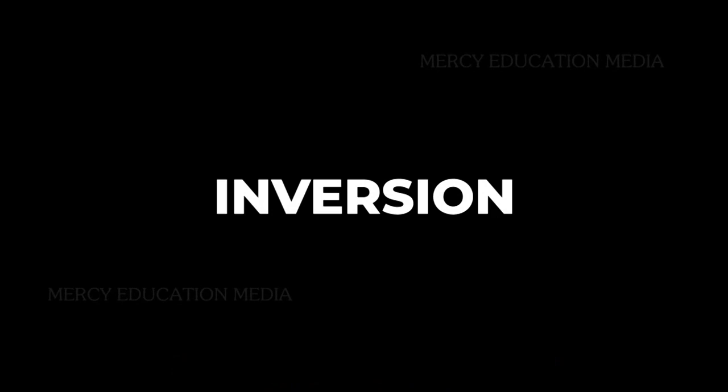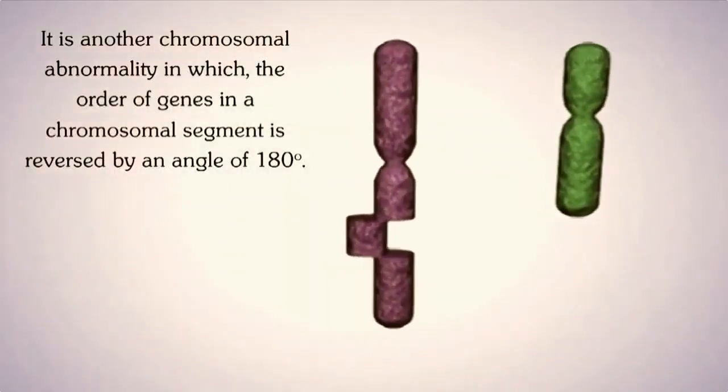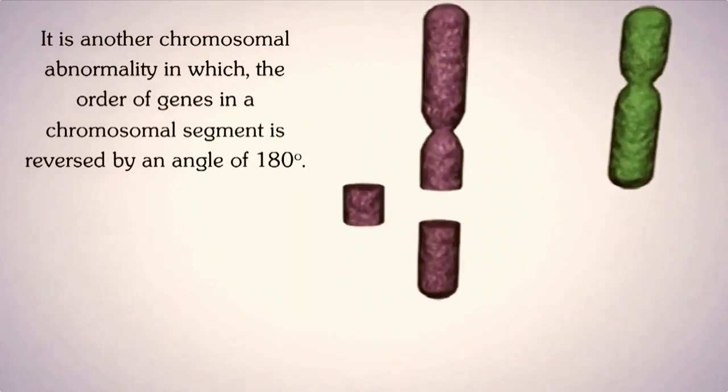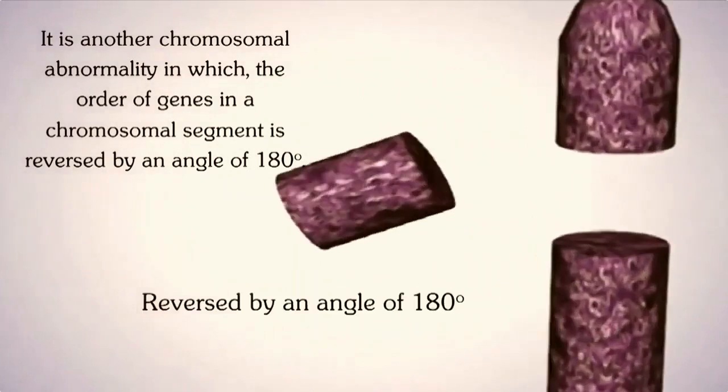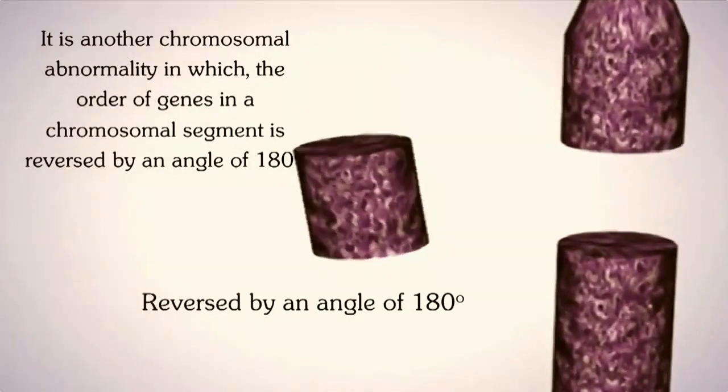Now let us see about inversion. It is another chromosomal abnormality in which the order of the genes in a chromosomal segment is reversed by an angle of 180 degrees.